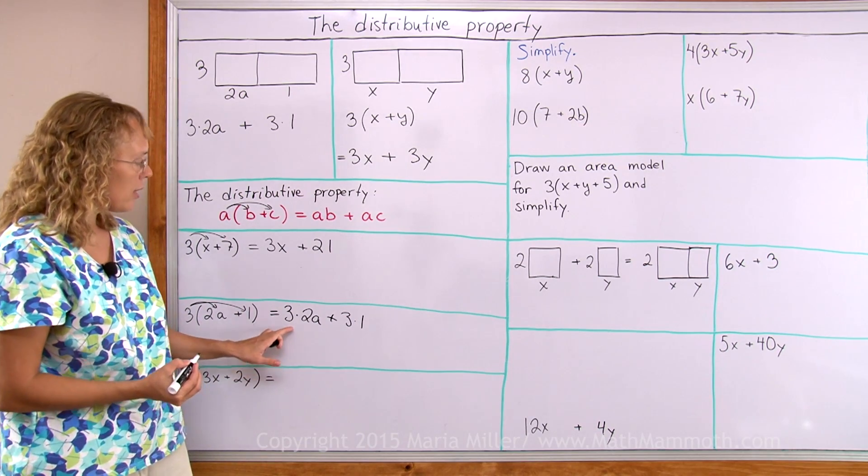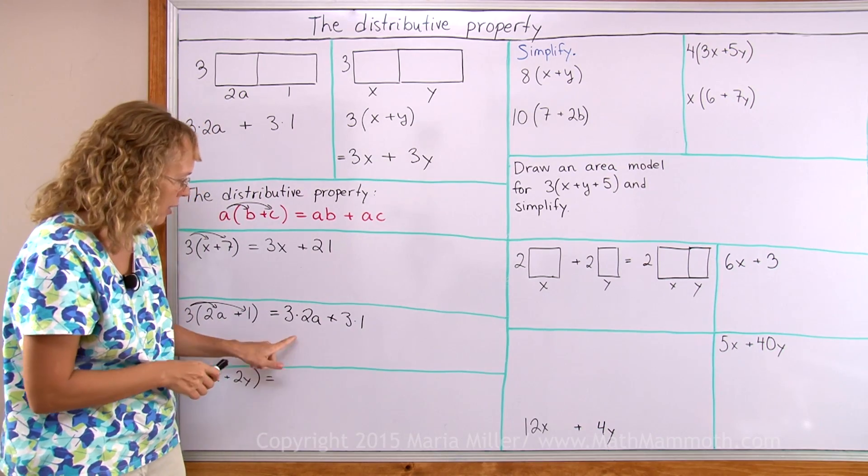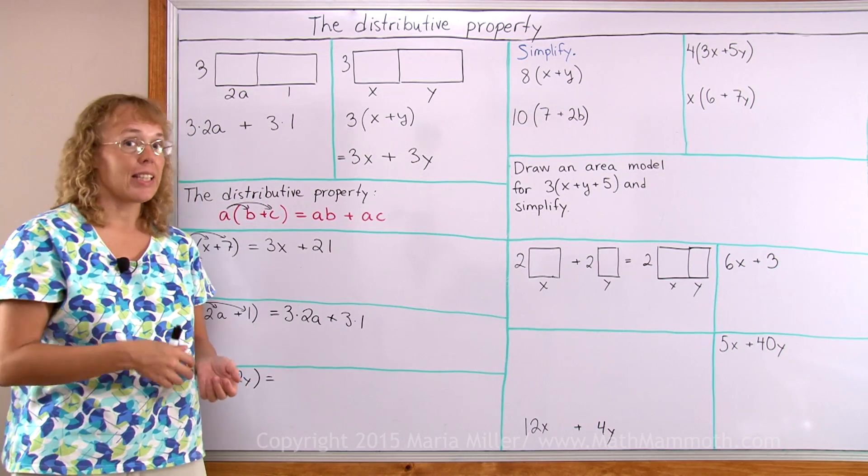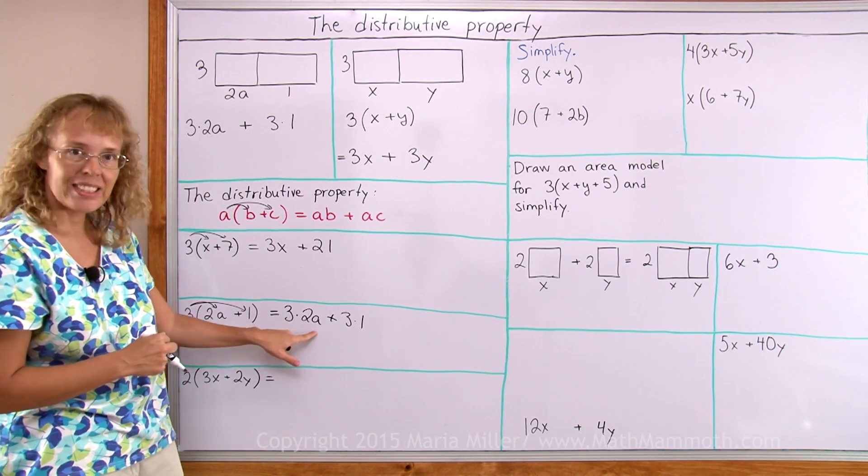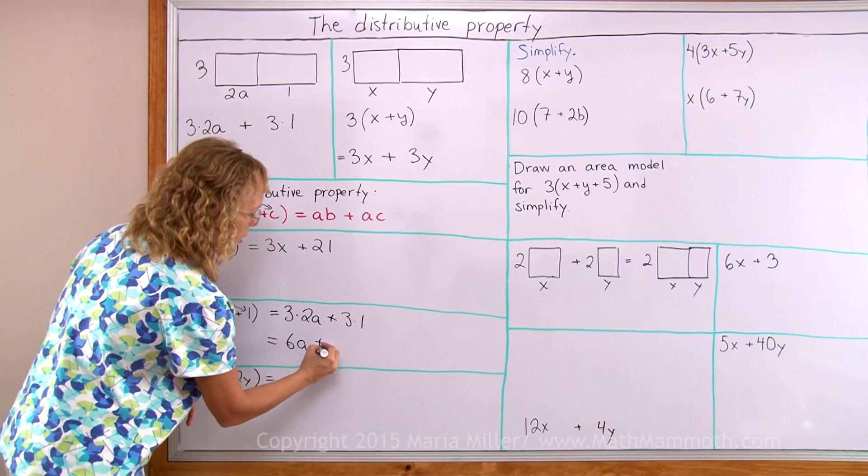This one here, 3 times 2a is actually 3 times 2 times a. And in this multiplication you can multiply 3 times 2 and get 6. So we can simplify it a little bit. This actually becomes 6a and then this becomes 3.